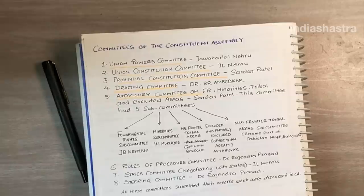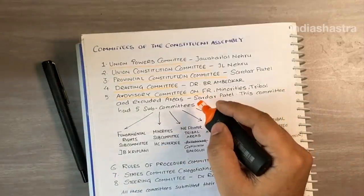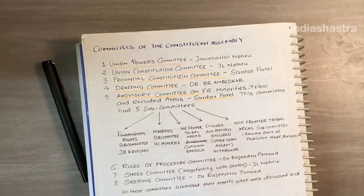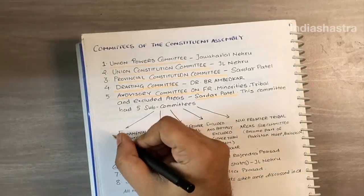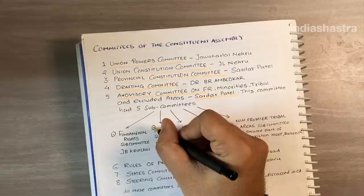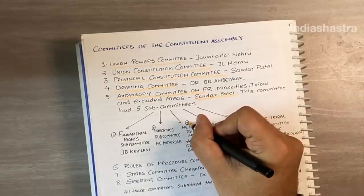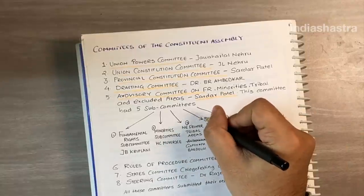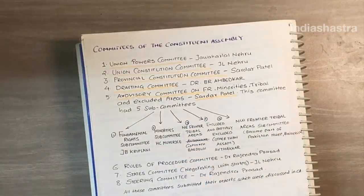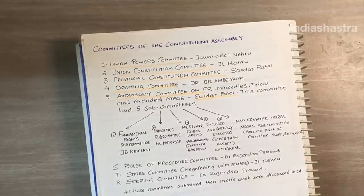The Advisory Committee on Fundamental Rights, Minorities, Tribal and Excluded Areas was headed by Sardar Patel. This committee had five subcommittees: Fundamental Rights Subcommittee, Minorities Subcommittee, Northeast Tribal Areas and Other Excluded Areas Subcommittee, and Northwest Frontier Tribal Areas Subcommittee. There was also the Rules of Procedure Committee headed by Dr. Rajendra Prasad, the States Committee for Negotiating with States headed by J.L. Nehru, and the Steering Committee headed by Dr. Rajendra Prasad.